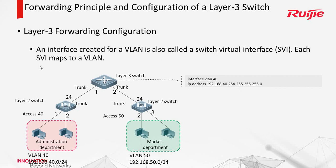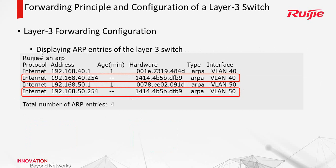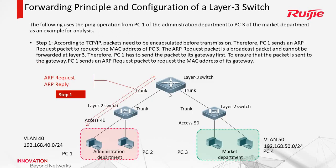Each SVI maps to a VLAN. For the layer 3 switch, besides the MAC address table, it also has the ARP table. We can use 'show ARP' to check it. Now let us see the steps of this project.